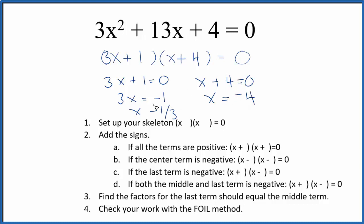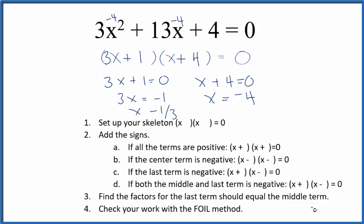If I plug negative one-third in for x and do the math, all of this will equal 0. Likewise, if I put negative 4 in for x, all of this would equal 0. That's how you factor and find the solution to 3x squared plus 13x plus 4 equals 0. You could also use the quadratic equation — it would give you the same answers. This is Dr. B.